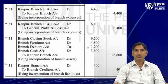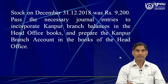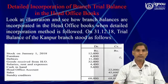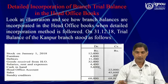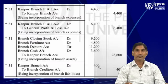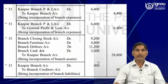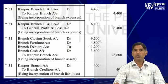The total of these four items is 28,200. Let us check: furniture 4,800, debtors 11,200, cash in hand 3,600, and closing stock 9,200 which is given in the adjustment.